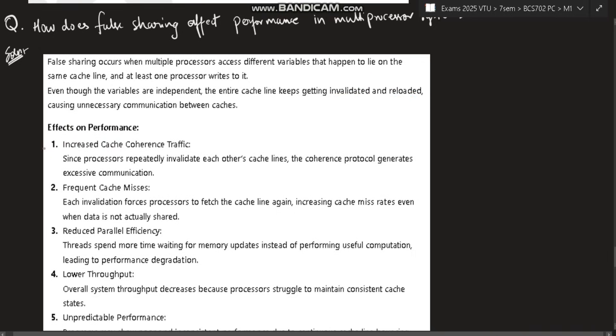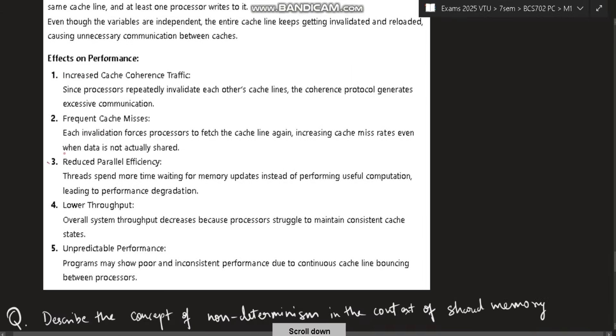So the effects on performance would be increased cache time. It will be very hard to get the values, proper values from the cache. You have to take from the memory. Frequent cache misses because cache will not have the proper data. So cache miss will happen. Reduced parallel efficiency - parallelly those computations cannot happen. Lower throughput will be there. The throughput, which is the output we are going to get, that will be low because cache is not able to produce proper data. And unpredictable performance. The programs may show fewer and inconsistent performance due to continuous cache line bouncing between the processors.